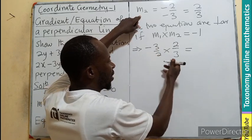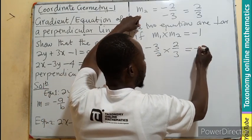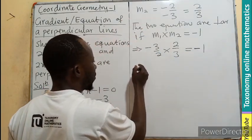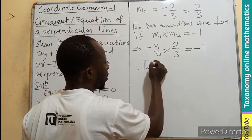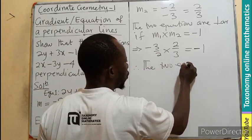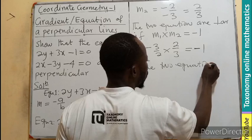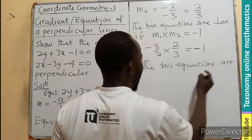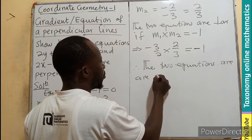Again, 2 will cancel 2. 3 will cancel. You have your negative 1. Therefore, the 2 equations are perpendicular.